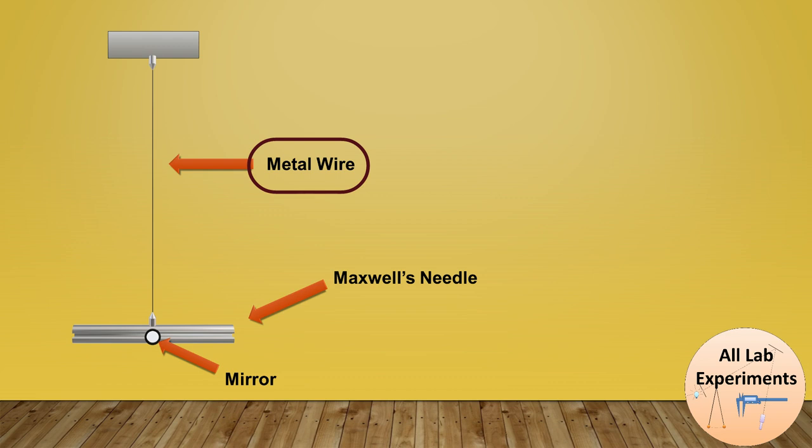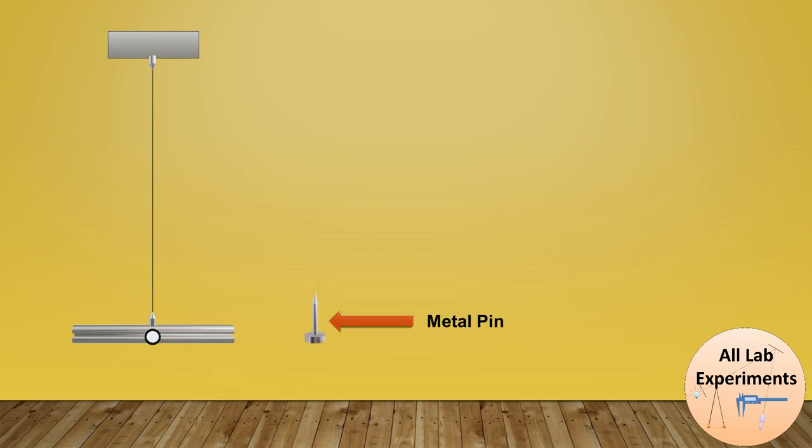The metallic wire is totally vertical and the Maxwell's needle is totally horizontal in this setup. We also have a mirror at the center of Maxwell's needle. Along with this, we have a metal pin, two identical solid cylinders,